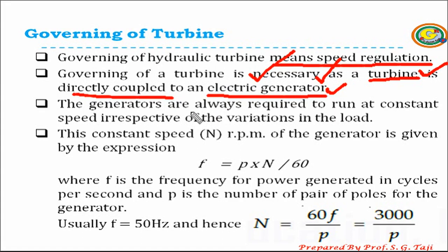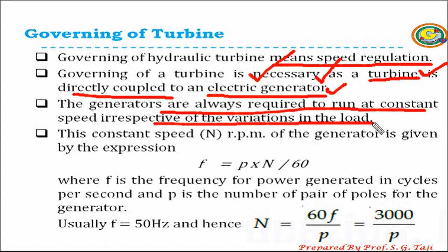So we need to maintain our generator at a constant speed. We need to run our generator at a constant speed irrespective of variation in the load — whether my load is going to increase or decrease. This constant speed can be maintained by either controlling input power or by maintaining constant output power. Output power is our load coming on the generator, and we cannot control load which is going to vary over time, but we can control whatever the input power given to the generator.